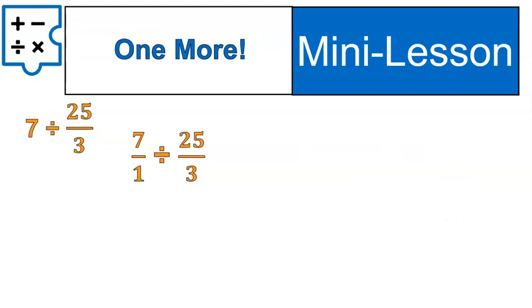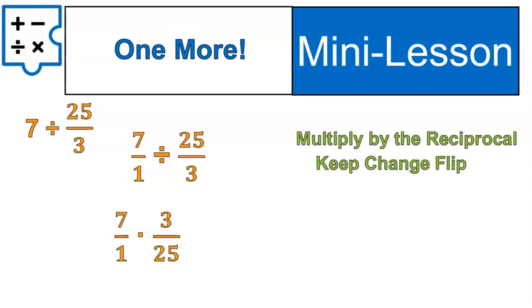Let's do another one. 7 divided by 25 over 3. Notice that we've changed 7 into 7 over 1, and that's the only thing we need to change. Everything else is going to remain exactly as it is. We're going to multiply by the reciprocal. 7 over 1 stays the same. The division changes to multiplication. And 25 over 3, we get the reciprocal. In other words, we flip it upside down to become 3 over 25.